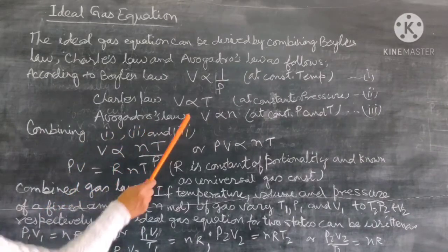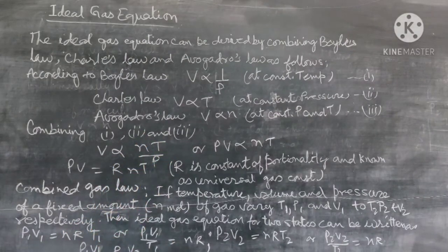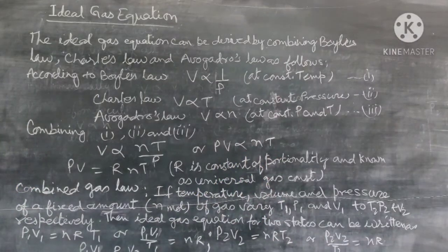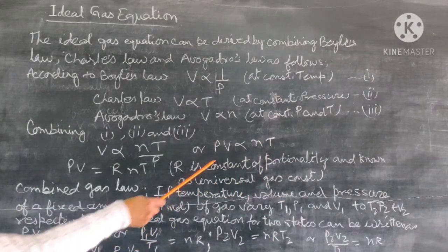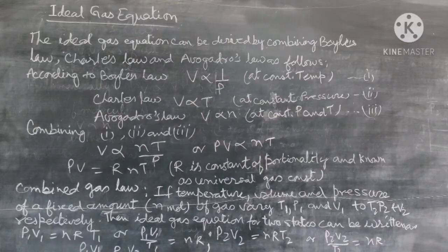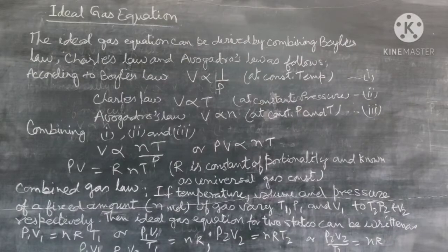By combining these three laws, we can write that volume is directly proportional to nT and inversely proportional to pressure. Or we can write that PV is directly proportional to nT. When we remove the proportionality sign, we can write PV equals RnT, where R is the constant of proportionality known as the universal gas constant. This equation PV equals nRT is called the ideal gas equation, applicable to any gas under conditions where its behavior approaches ideal behavior.